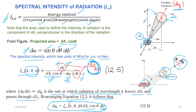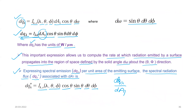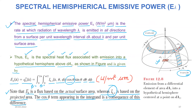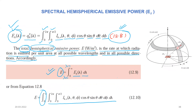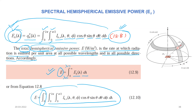Finally, dq_lambda — the spectral energy leaving in a particular direction — is given by i_lambda_e multiplied by the normal surface area dA1·cos(θ) times d_omega, where d_omega equals sin(θ)dθdφ. From this we calculate the spectral radiation flux dq_lambda/dA1, then the spectral hemispherical emissive power e_lambda, and finally the total hemispherical emissive power E. For today, this lecture is sufficient.